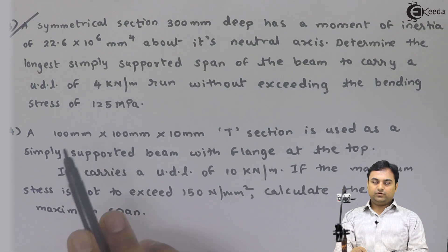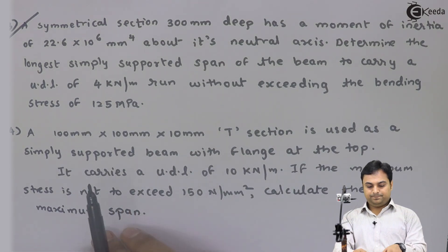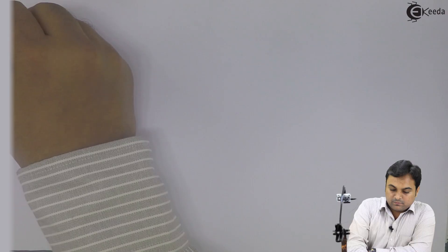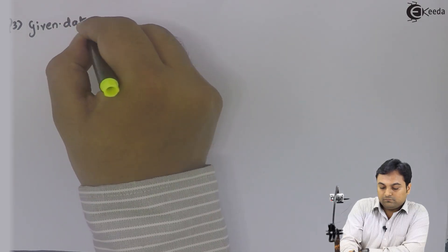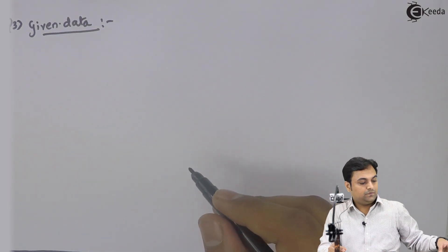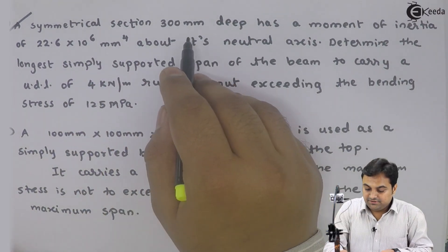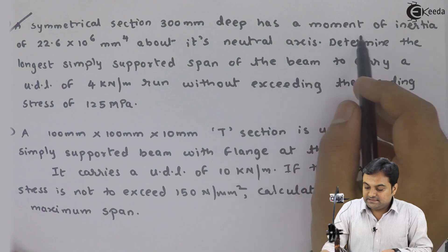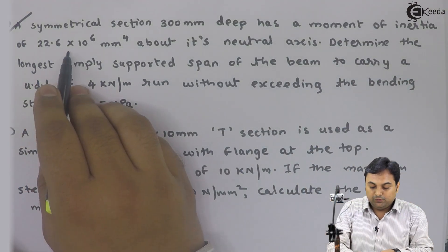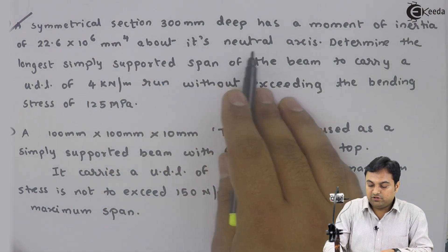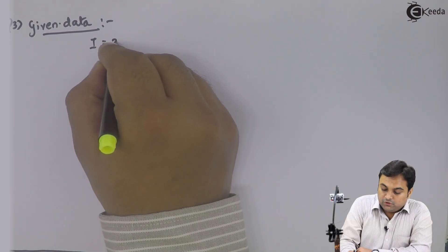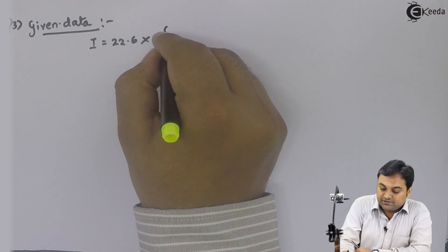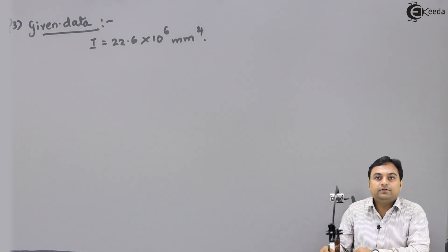Whatever is given in this question, I will write it in the form of data. Question number 3 for today. A symmetrical section 300 mm deep has a moment of inertia of 22.6 × 10⁶ mm⁴ about its neutral axis. I ka value diya huayai, I = 22.6 × 10⁶ mm⁴.